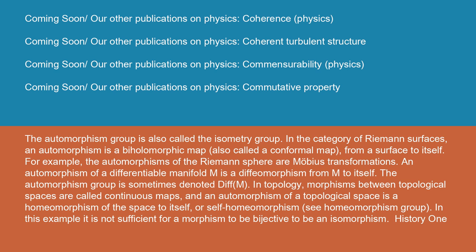In the category of Riemann surfaces, an automorphism is a biholomorphic map, also called a conformal map, from a surface to itself. For example, the automorphisms of the Riemann sphere are Möbius transformations. An automorphism of a differentiable manifold M is a diffeomorphism from M to itself. The automorphism group is sometimes denoted Diff(M).